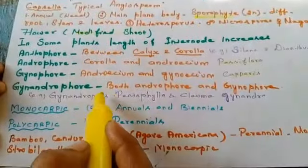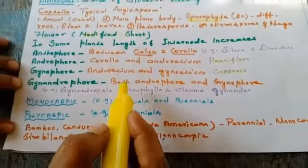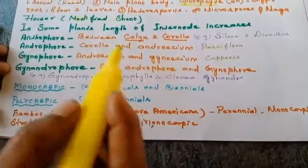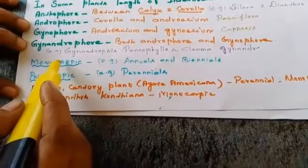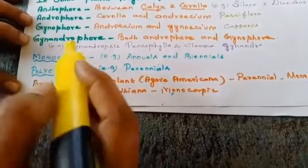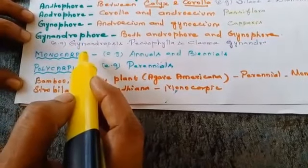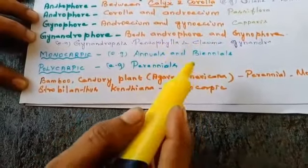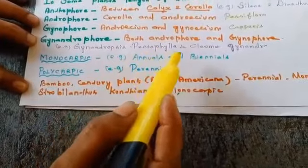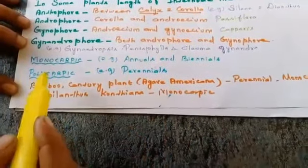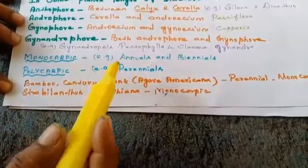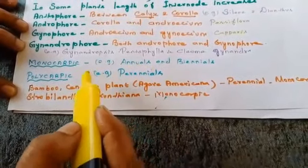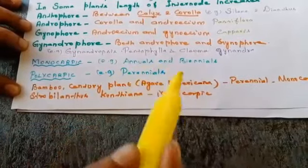So far we have seen the structure of a flower. On the basis of the above examples, it is proved that a flower is a modified shoot. Next, we will see monocarpic and polycarpic. What is monocarpic? Flowering and fruiting take place only once in its lifespan — that is called monocarpic. Example: annuals and biennials. What is polycarpic? Flowering and fruiting take place many times in its lifespan — that is called polycarpic. Example: perennials.